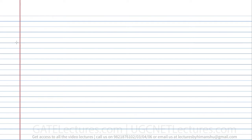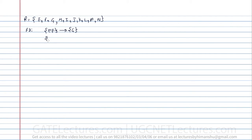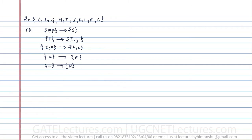The next question asks which of the following is the key for relation R. The relation R has attributes E, F, G, H, I, J, K, L, M, and N. The functional dependencies given are: EF determines G, F determines IJ, EH determines KL, K determines M, and L determines N.